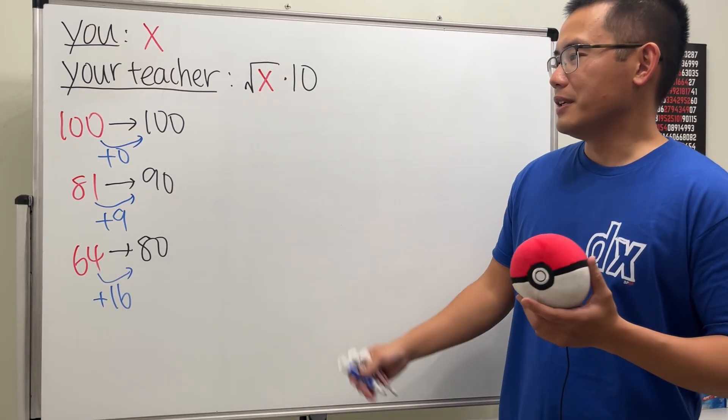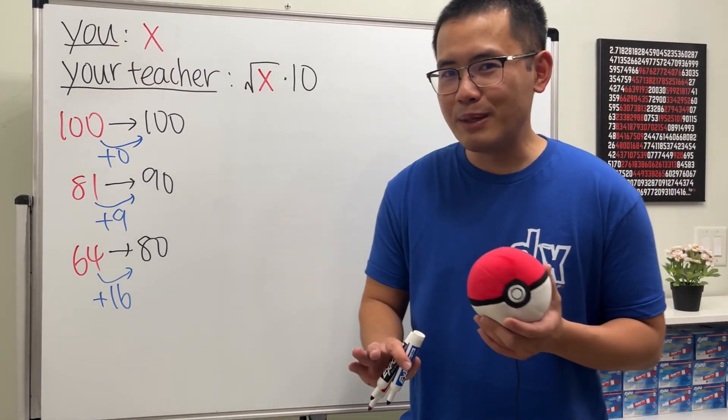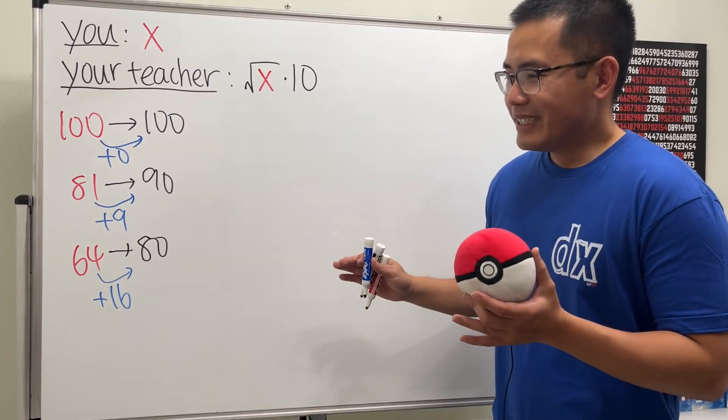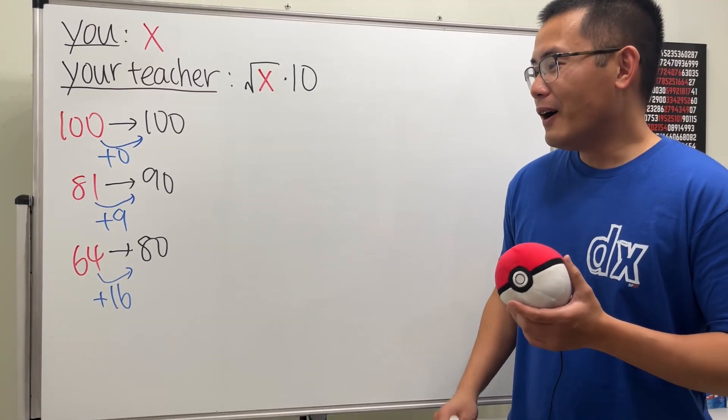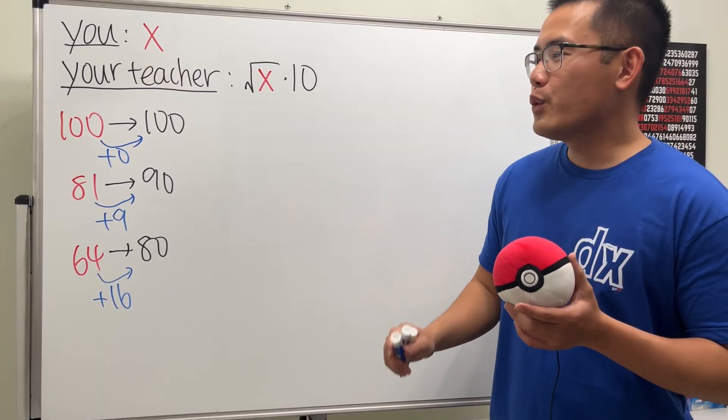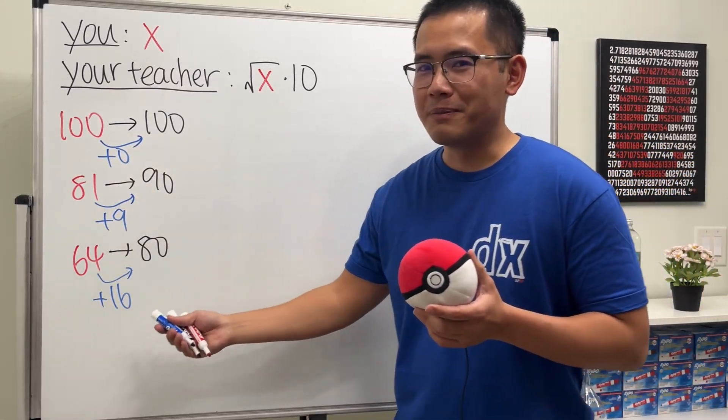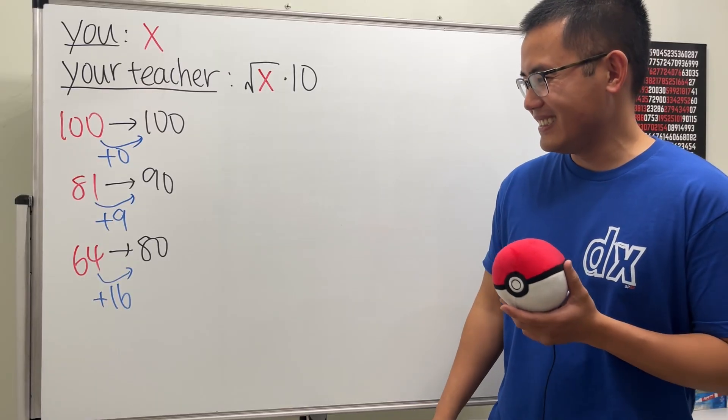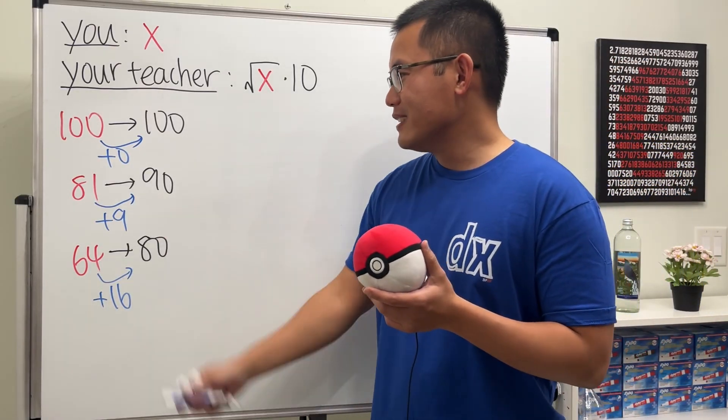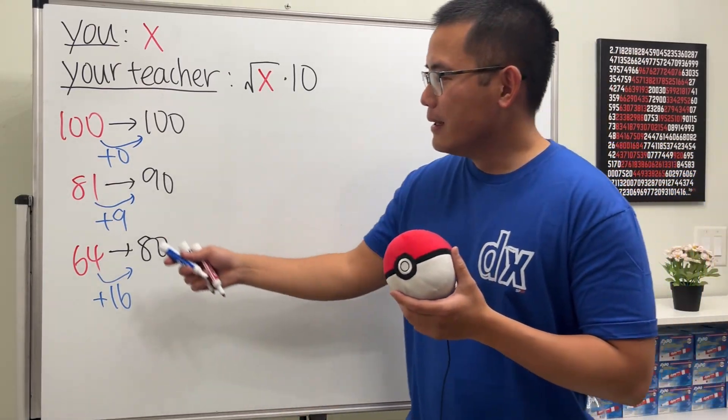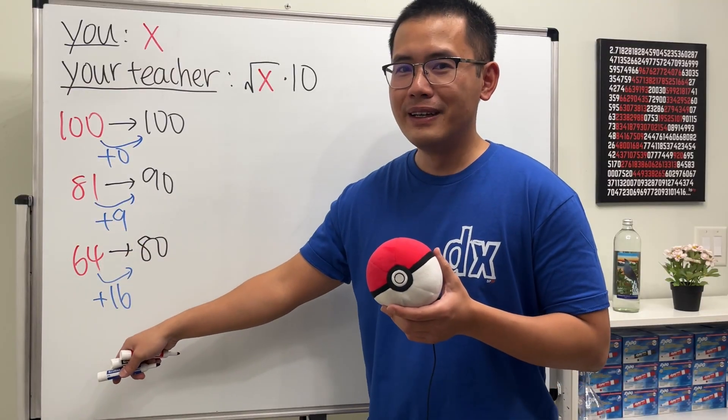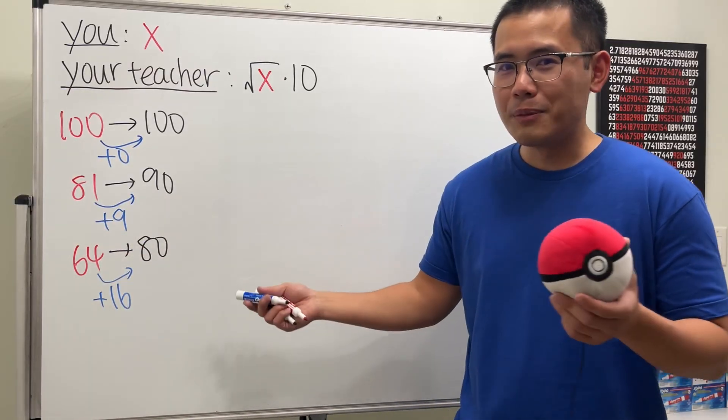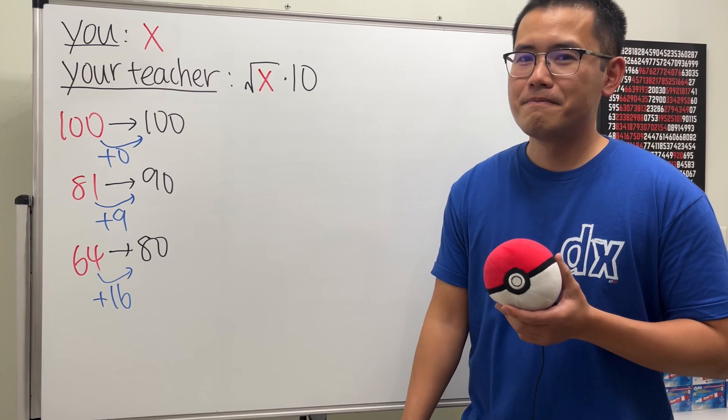So the question is, of course, I'm not recommending you guys to score, to aim for that score, right? The question is, what score should we aim for so that we can possibly gain the most amount of extra credit? And by the look of this right now, it seems like the lower the score that we have, the more points that the teacher will help us to get, right? But that's not true.